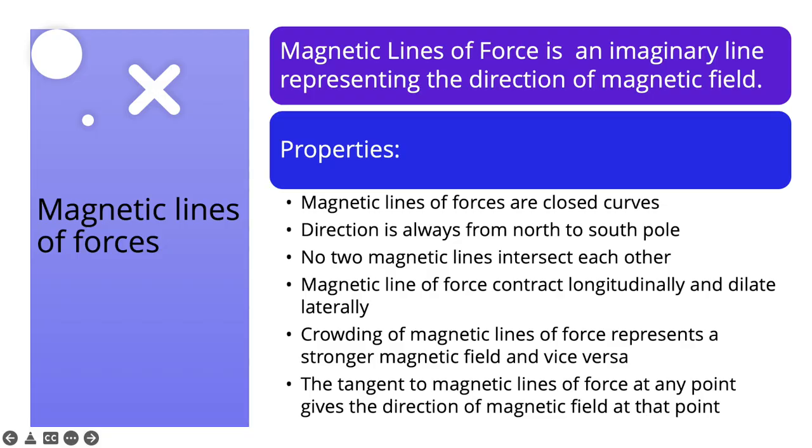Another important concept is magnetic lines of force. A magnetic line of force is an imaginary line representing the direction of the magnetic field around a magnet. It doesn't physically exist but is used to represent magnetic field direction. The properties of magnetic lines of force are closely related to the properties of magnets. Firstly, magnetic lines of force are closed curves, and their direction is always from the north to the south pole.